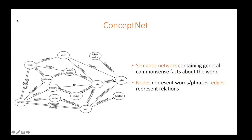ConceptNet is a semantic network that contains general common-sense facts about the world, such as 'birds can fly' or 'computers are used for sending emails.' Knowledge facts in ConceptNet are represented as triples, where nodes represent words or phrases and edges represent the relations that hold between them.